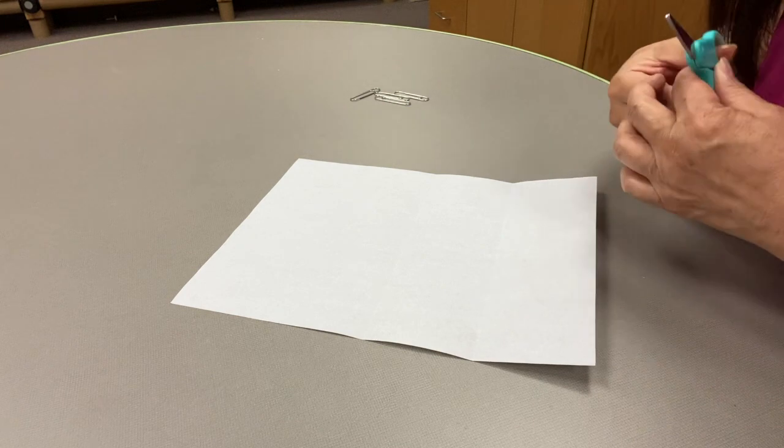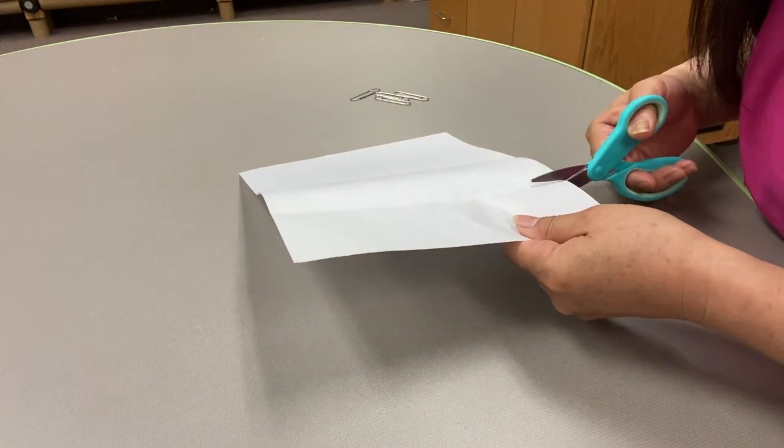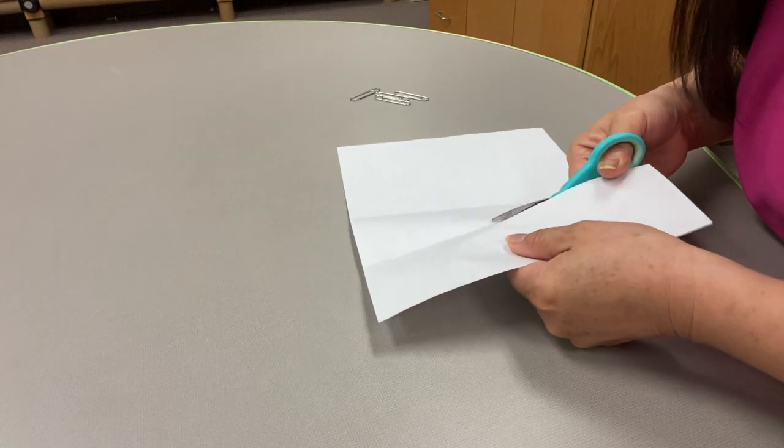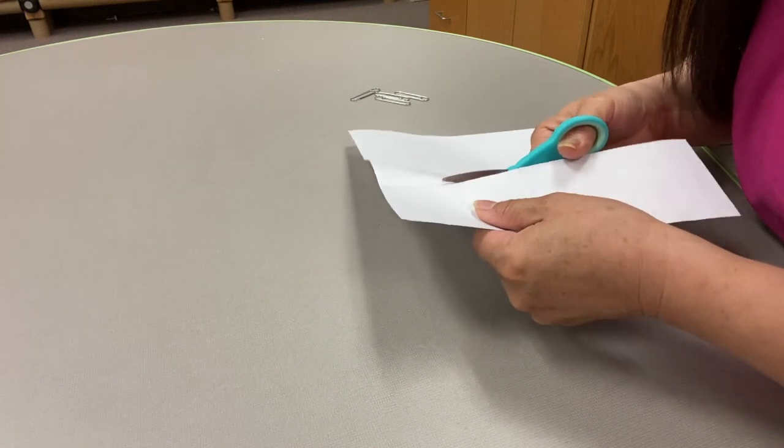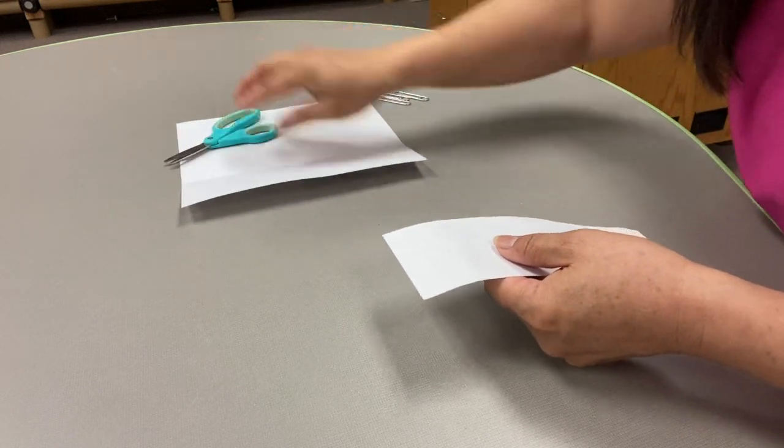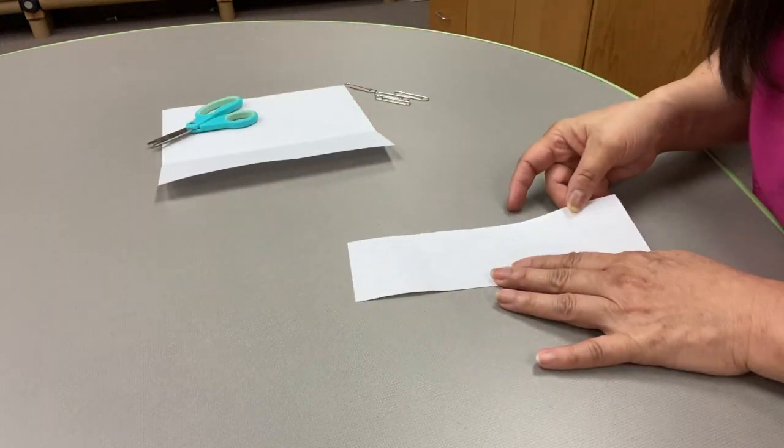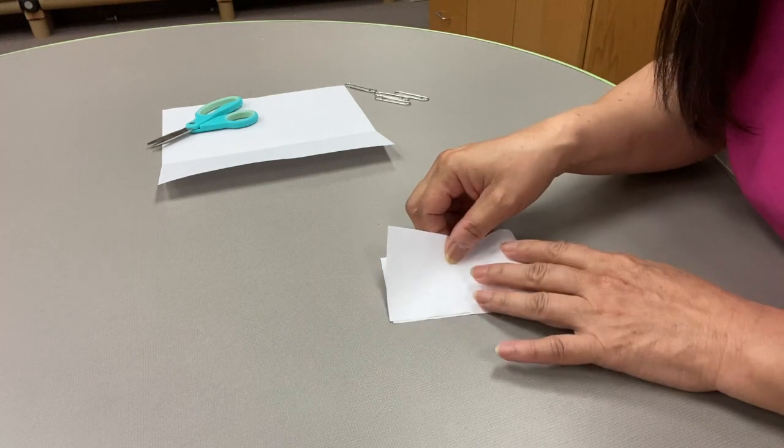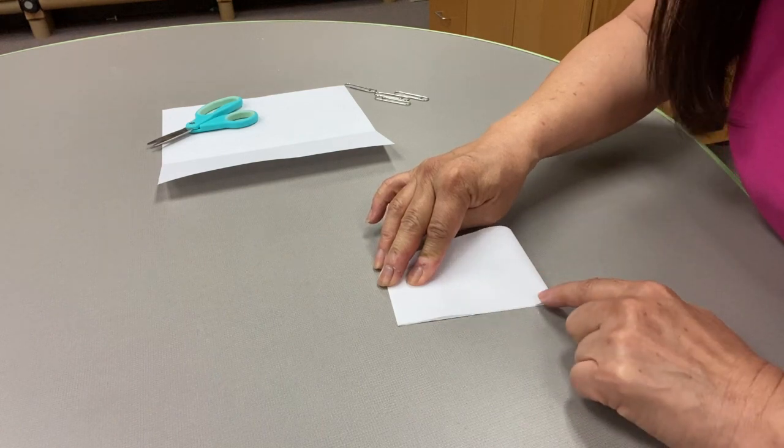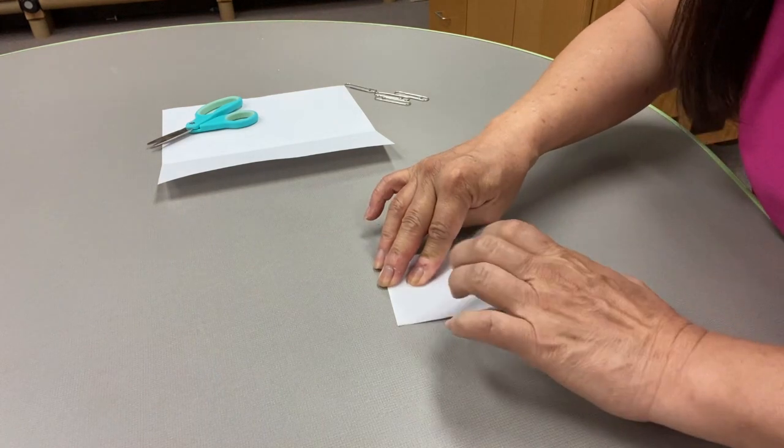Then take your scissors and cut where you folded. Put the rest of the paper aside. Take this and fold it in half, but don't crease it. Just crease it a little bit on the ends.